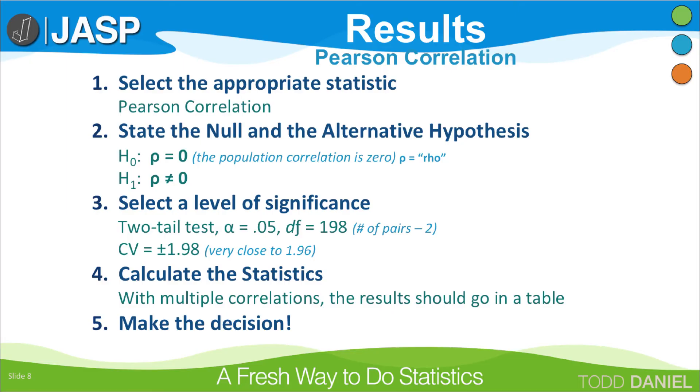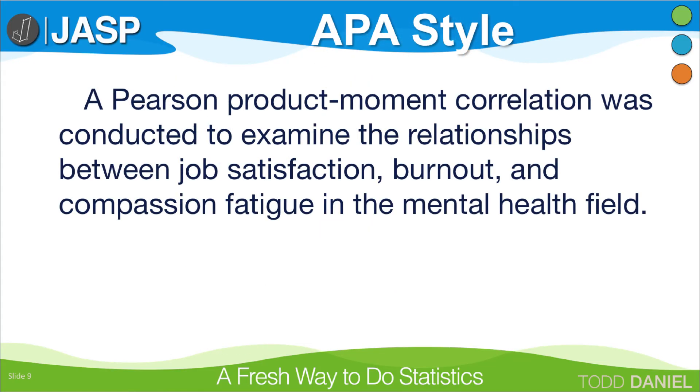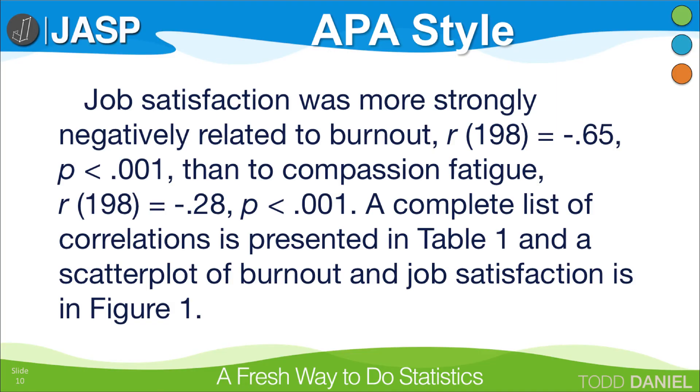Step five is to make the decision. But again, some correlations may be significant while other correlations are not, so we will want to write up the correlations that are most important for our research question. We would report the results in APA style like this. We would mention the type of test and the purpose of the research. Notice that in APA style, you do not capitalize the names of the variables. Next, we would report important correlations, including R, degrees of freedom in parentheses, the coefficient, and its significance value. The degrees of freedom is n minus 2, where n is the number of pairs for that correlation. Each of our correlations was for 200 pairs, so the degrees of freedom are 198.